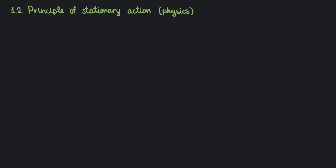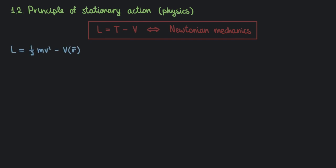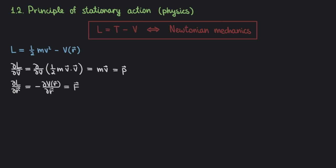This is where we are transitioning to talking more about physics. The physical claim is the following: define the function L as kinetic energy minus potential energy. Then the Euler-Lagrange equations are sufficient to reproduce all the results of Newtonian mechanics. In fact, you can see the Euler-Lagrange equations as a fancy way of writing down Newton's second law. Indeed, for a particle moving in Euclidean space, the derivative of L with respect to velocity gives us the momentum of the particle, and the derivative of L with respect to the position vector gives us the force acting on the particle. As a result, we obtain Newton's second law.